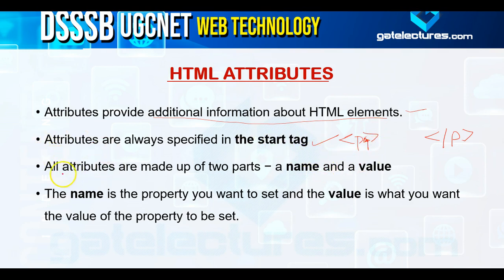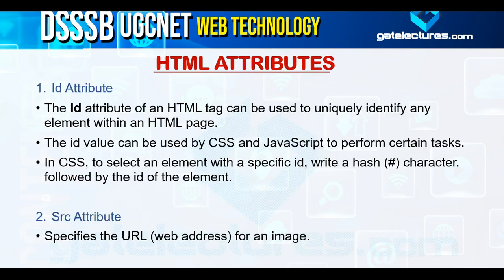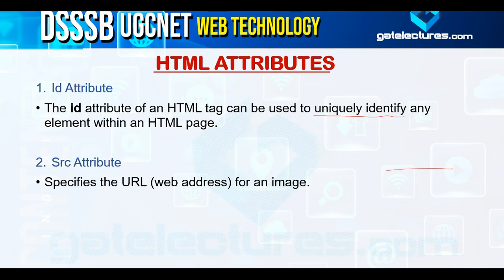All attributes are made up of two parts: the first one is name and the second one is value. First you put the name of the attribute, then you put the value of that attribute. The name is the property you want to set, and the value is what you want the property to be set to.